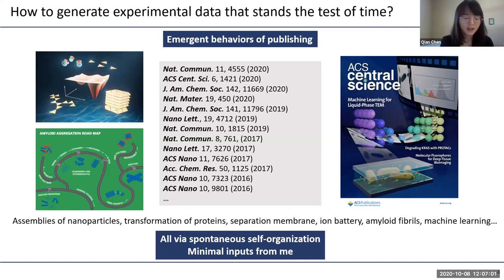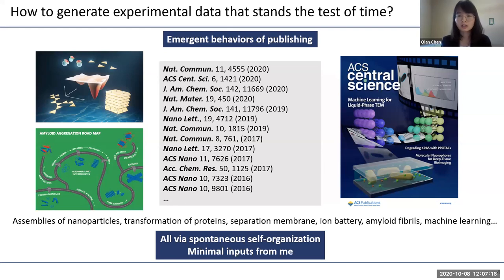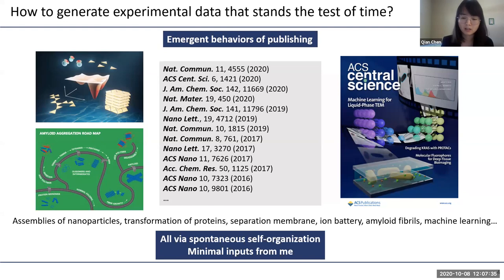In my talk today, I'm going to talk about three types of systems. In each system, I'll show you how cinematography at the nanoscale — taking images or movies at nanometer resolution, sometimes at milliseconds temporal resolution — can provide new insights. When we talk about cinematography, it's not just about imaging shapes or morphology; it's also about getting chemical information, which I'll emphasize towards the end.